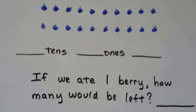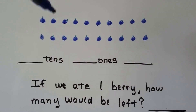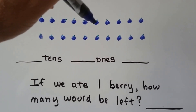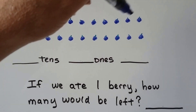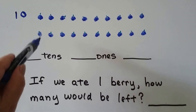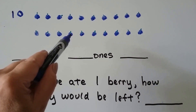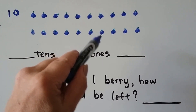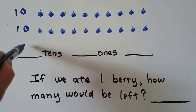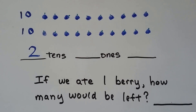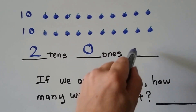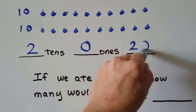Now how many tens and ones do we see? Let's count. One, two, three, four, five, six, seven, eight, nine, ten — so that's a ten. One, two, three, four, five, six, seven, eight, nine, ten — and that's a ten. We have two tens. Do we see any ones? No. There's zero ones. So we have two tens and zero ones.